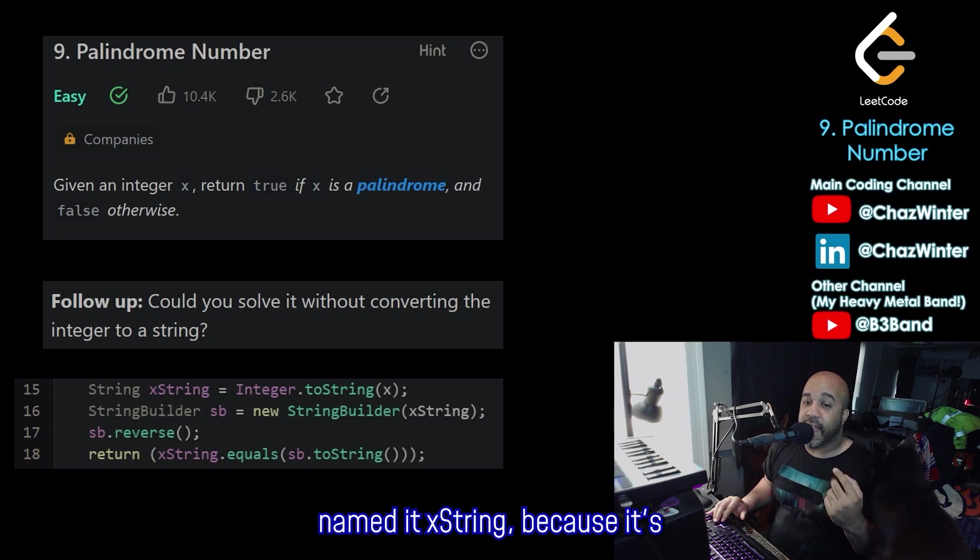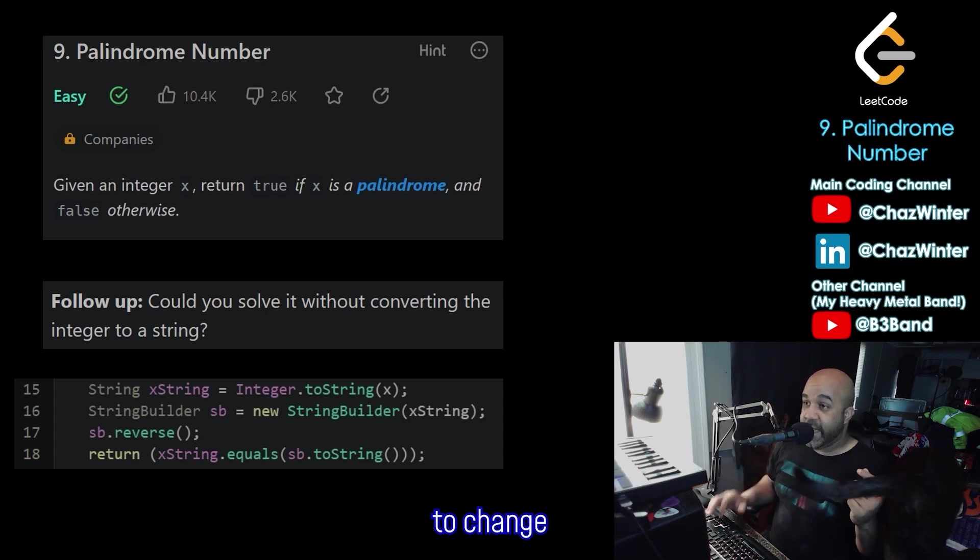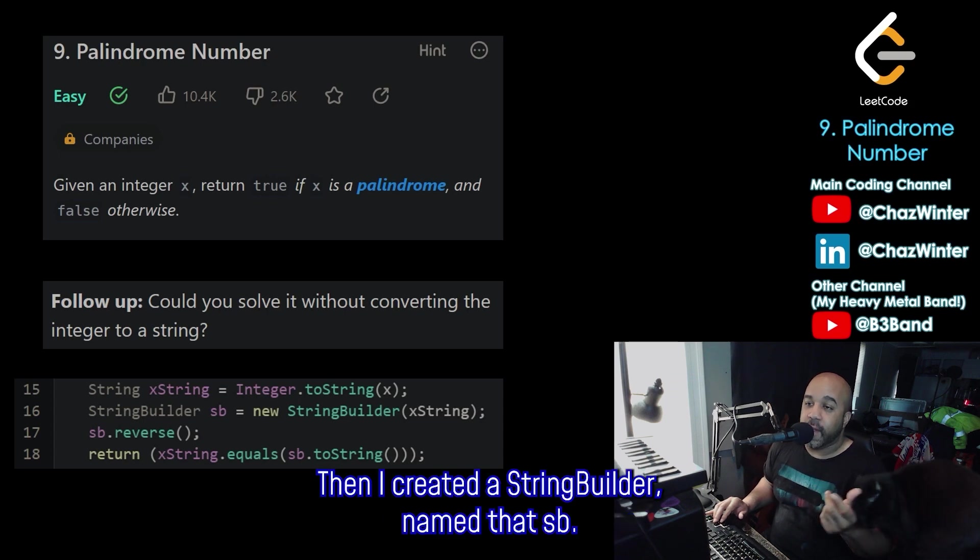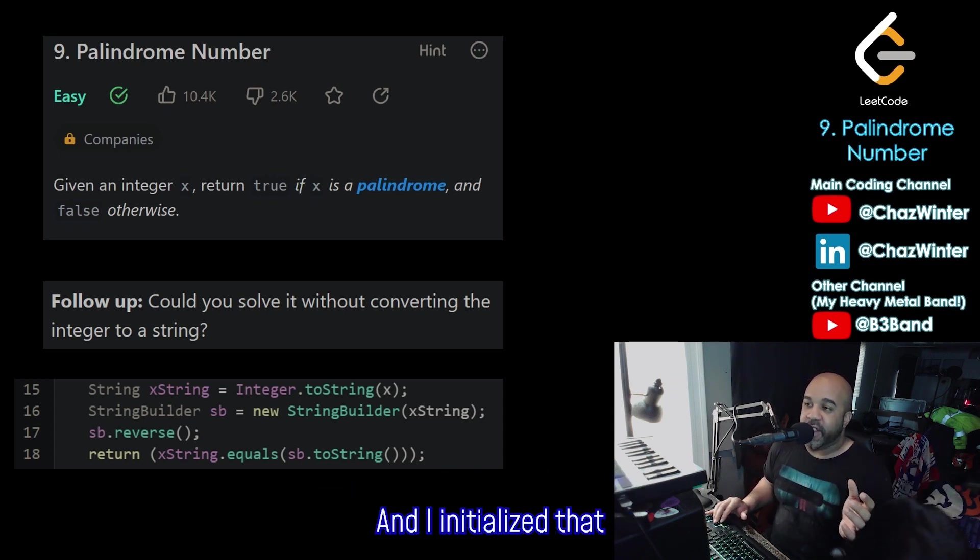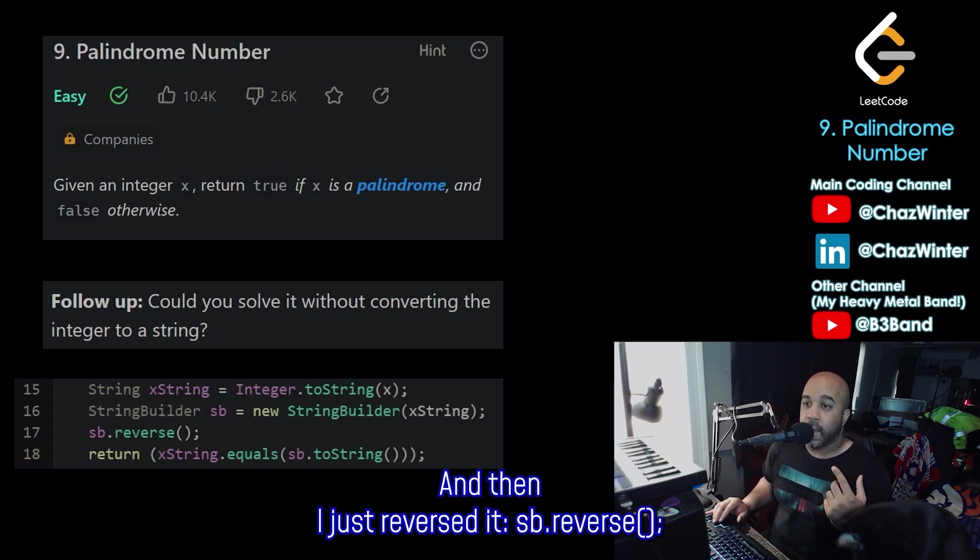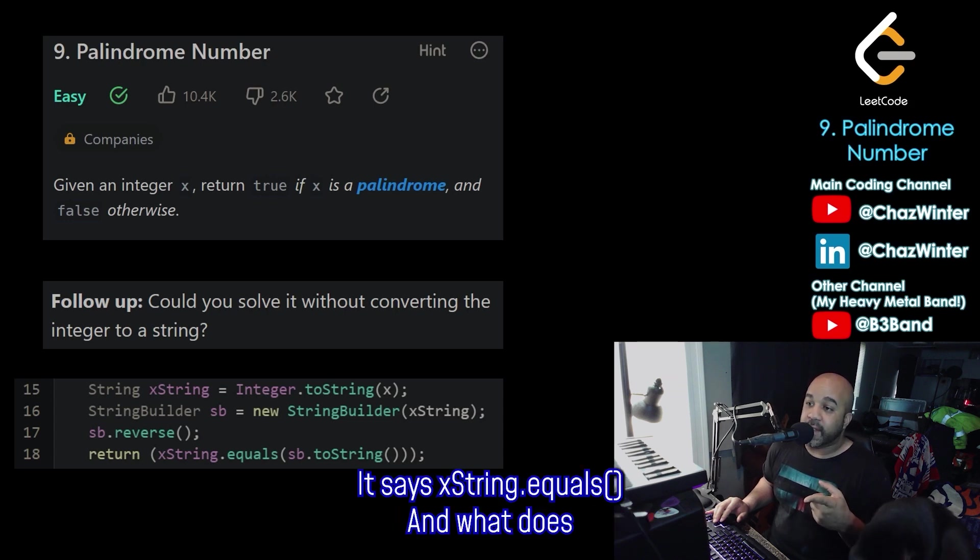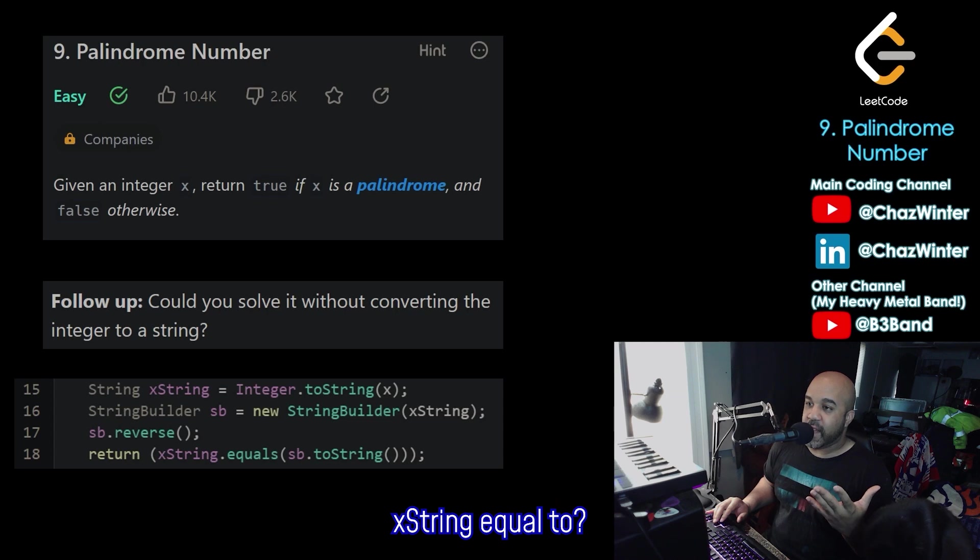If you want me to walk through it real quick, I just made a string, named it xString because it's the string version of the value x. And then I just used the function toString to change that integer x into a string. Then I created a string builder named it sb. And I initialized that string builder to start with the string that I just created, xString. And then I just reversed it, sb.reverse. And then all I have to do is return whether that reversal is equal to xString. So that's what the final line is.